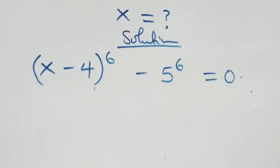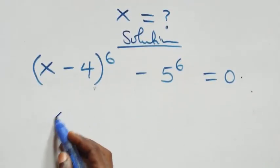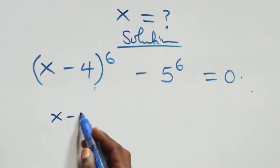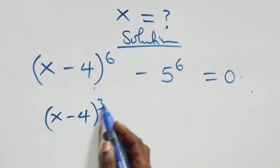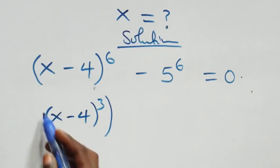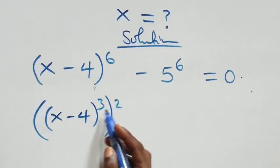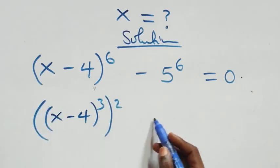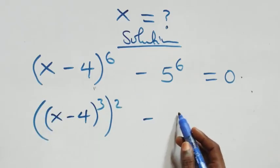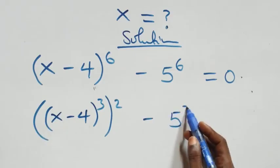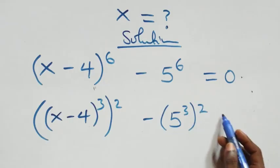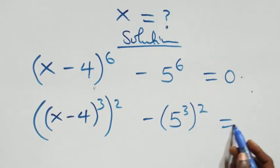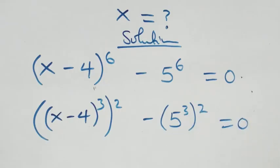That is, here we can write this as (x minus 4) raised to the power 3, then raised to the power 2. As 2 times 3 gives us 6, then minus 5 raised to the power 3, then raised to the power 2, equals to 0.